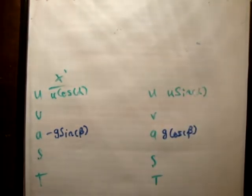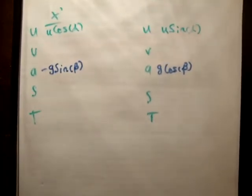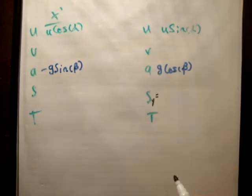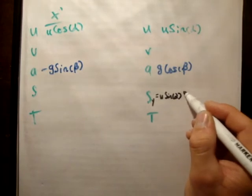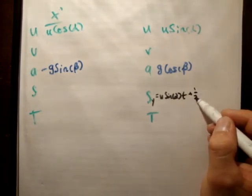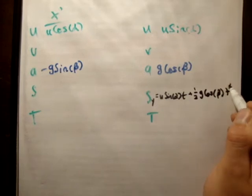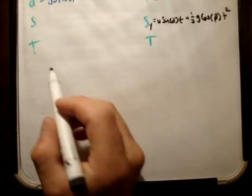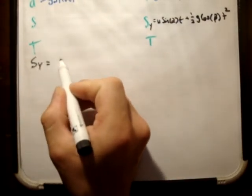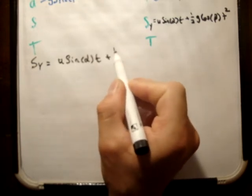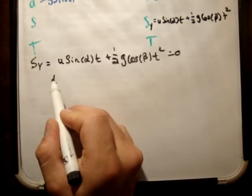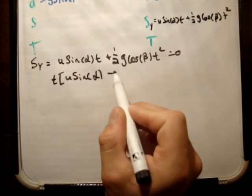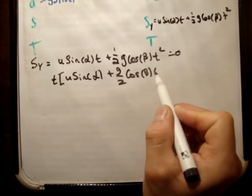We're asked to find the range, which is when S sub y equals 0. So we need to find S sub y and find the time at which S sub y equals 0. Using s = ut + ½at², it becomes u sin alpha · t plus ½ g cos beta · t² equals 0.